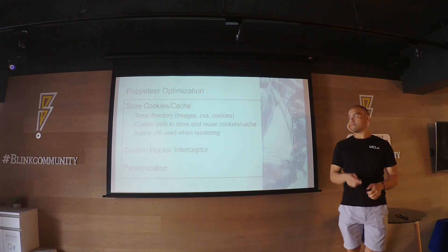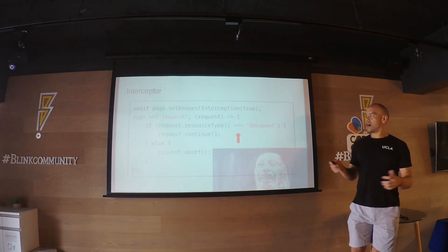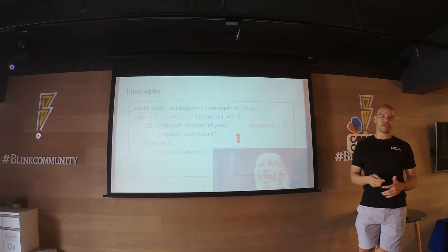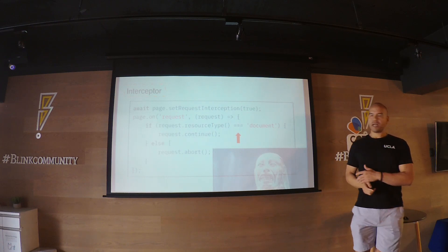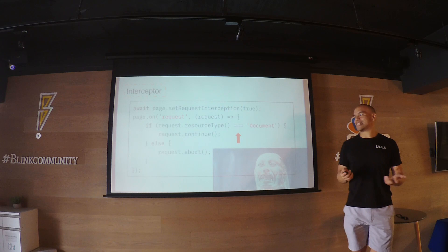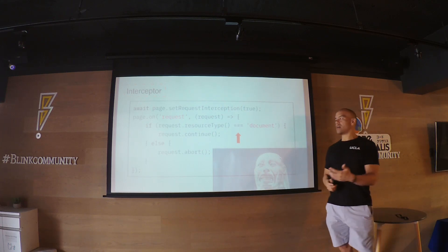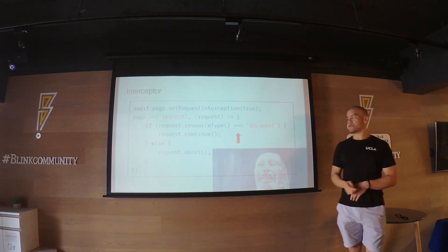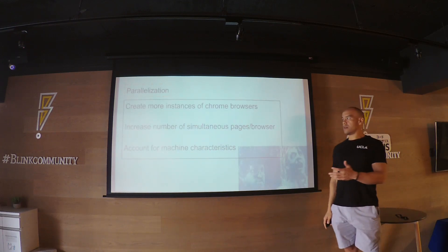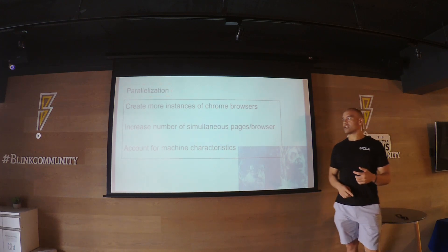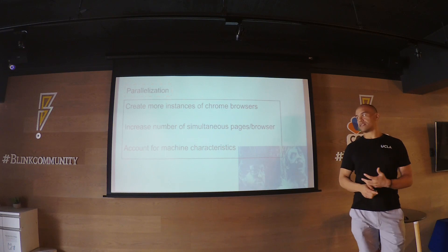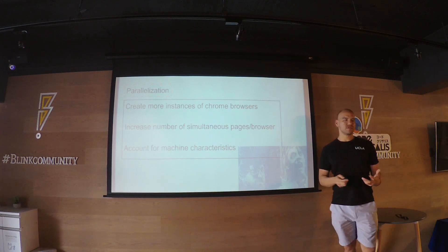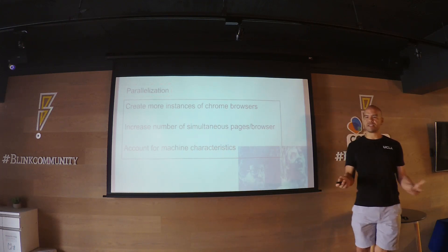Puppeteer's interceptor is very cool. As you're going through a data script, if the resource type is not a document you can choose to skip it completely. If you come across an image or other resource data type you can avoid it entirely - one way to speed up and optimize your crawl or scrape. Regarding parallelization: basically just opening up more Chrome browsers and more pages within each browser. The only thing to consider is that everything depends on your machine - how many pages per browser, how many browsers at one time before your computer crashes.